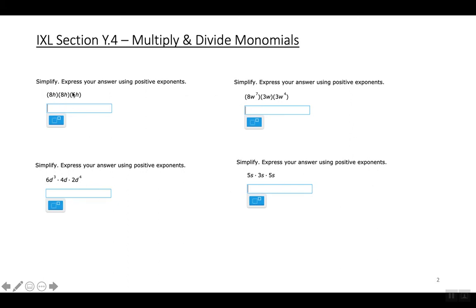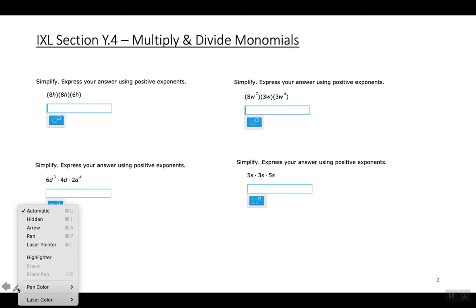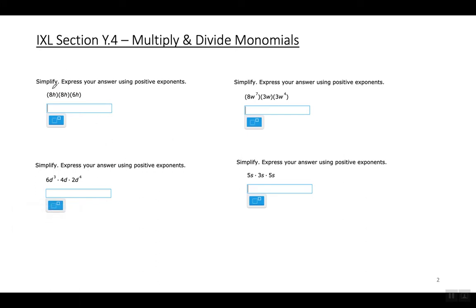When multiplying three terms, you multiply the numbers times the numbers and the variables times the variables. In the first example, 8 times 8 is 64, and 64 times 6 is 384. Then h times h times h is h to the third power, because you're adding the exponents — each one has an invisible exponent of one. So the answer is 384h to the third power.